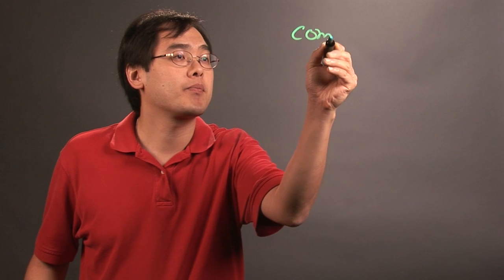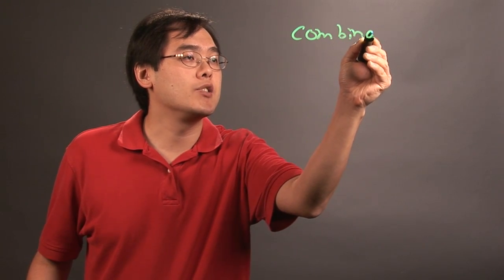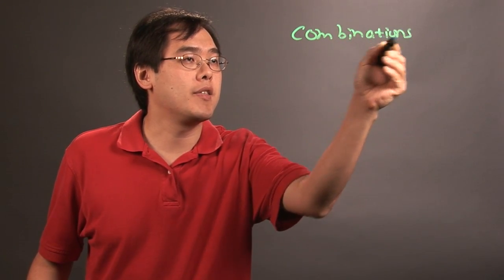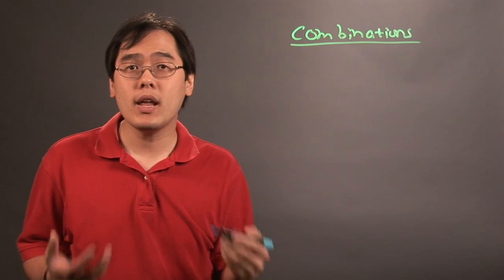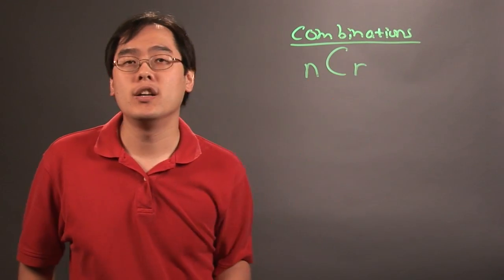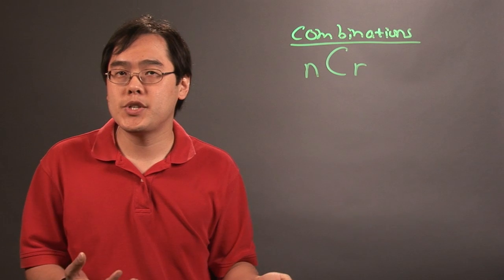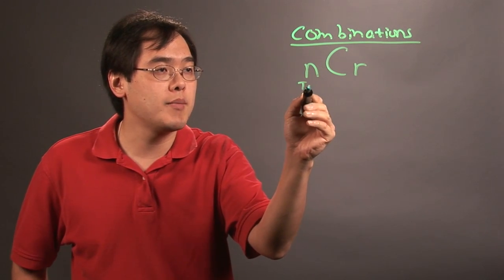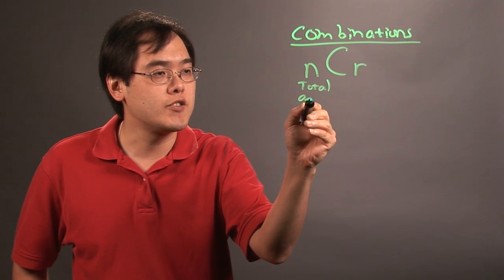So here's the combinations formula. In combinations, which is used in probability theory and counting scenarios, it's nCr. N and r are kind of like subscripts here, and basically n is the total amount of objects that you have to choose from.